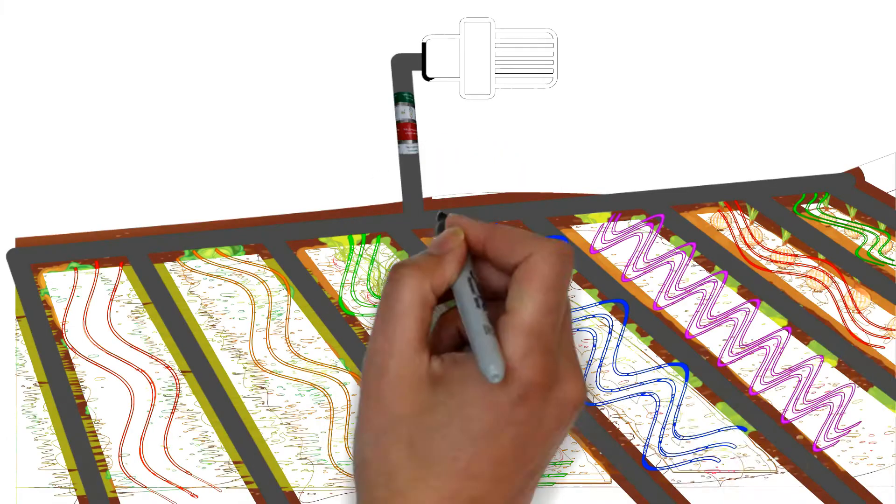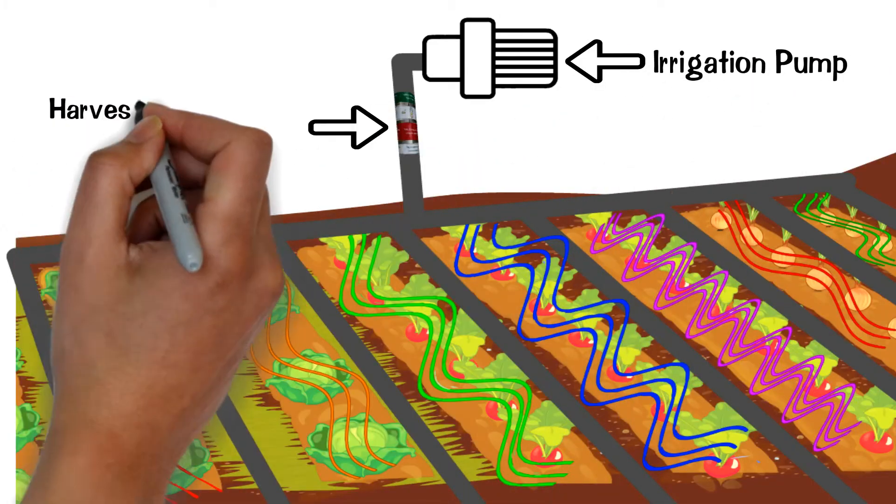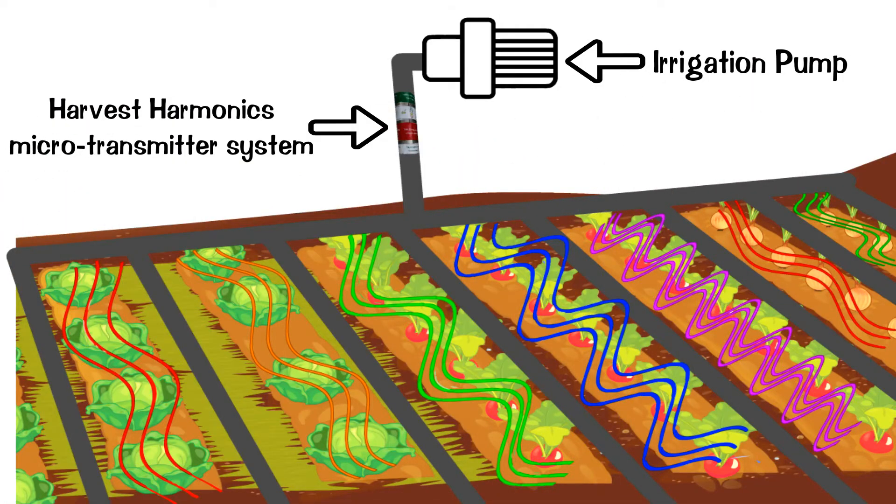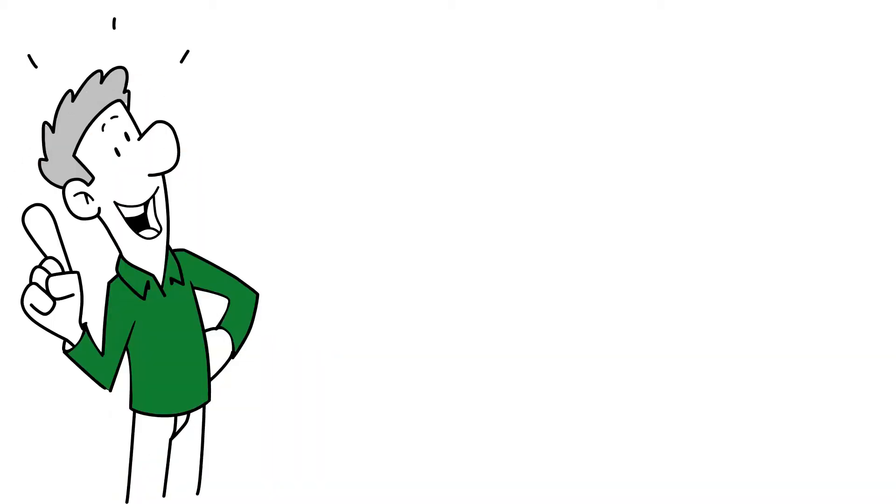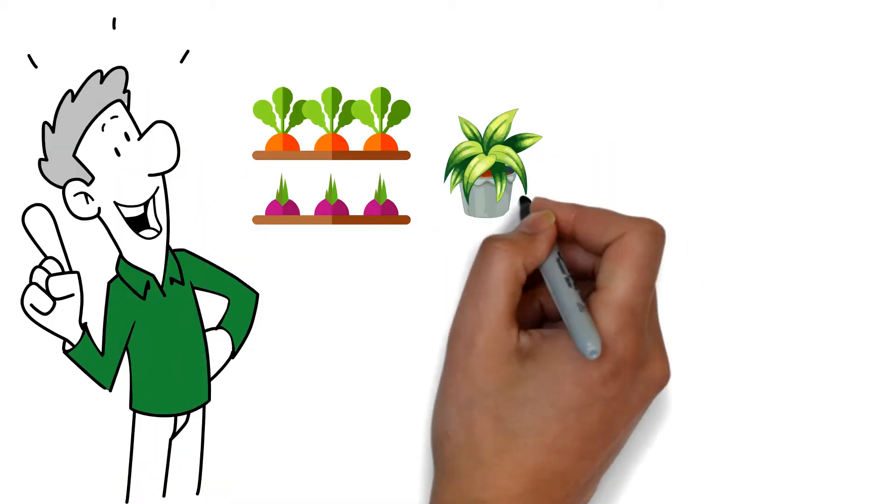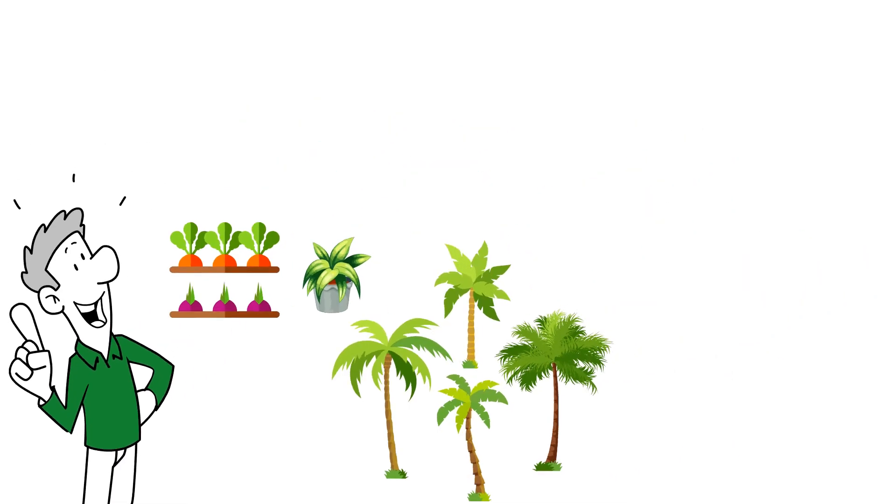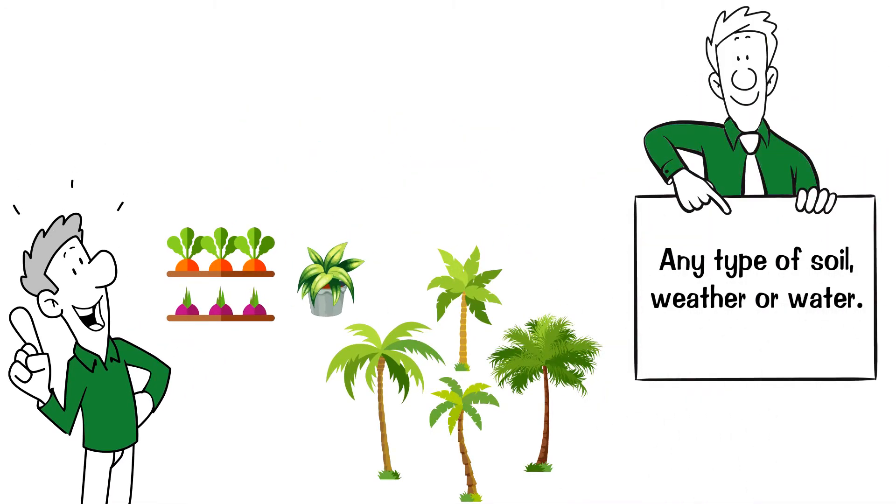This will send the algorithmic wave packets to your plants every time the water flows through it. This microtransmitter system can be used for any type of crop, both in agriculture and in ornamental plants, trees, etc. It also works with any type of soil, weather, or water.